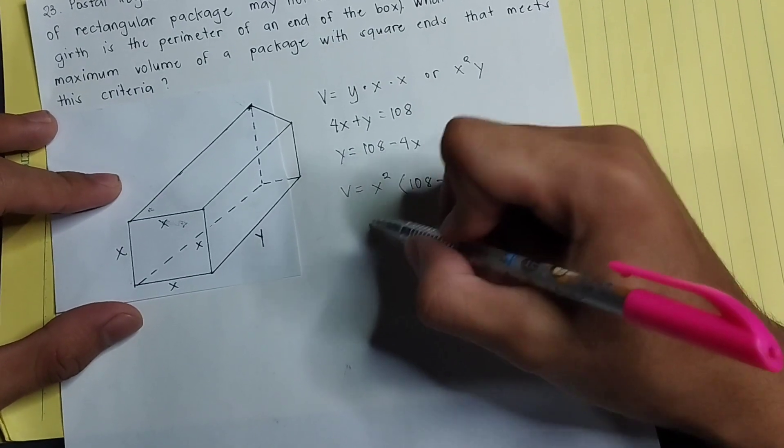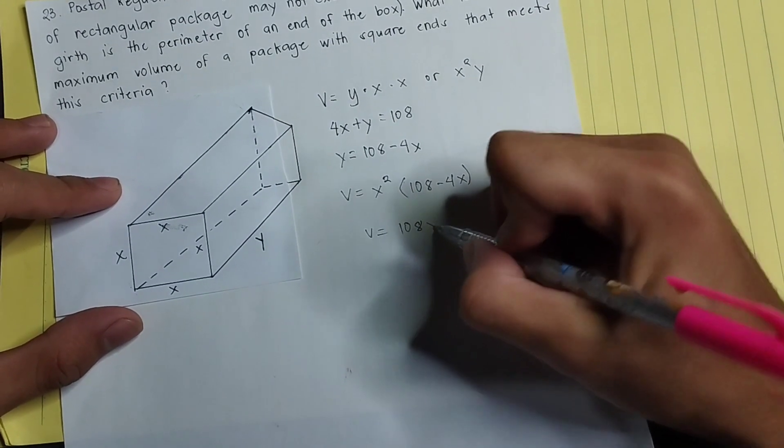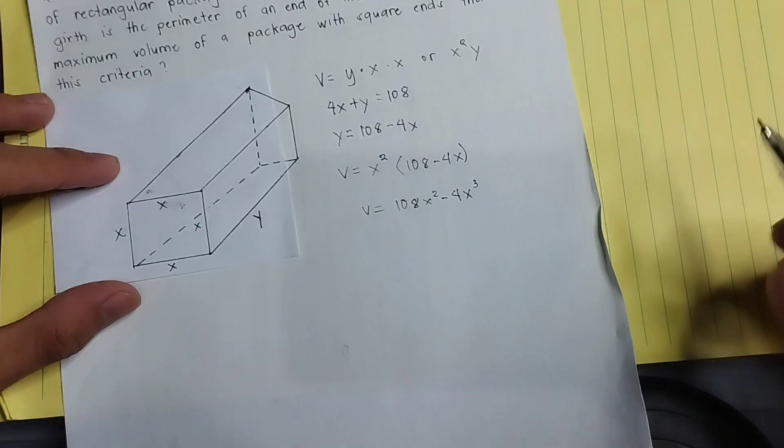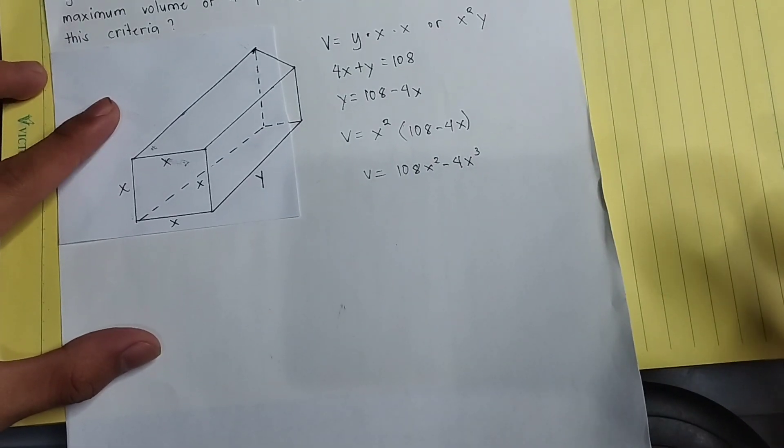And then we can distribute x squared into these two numbers. It will become V equals 108x squared minus 4x cubed. And then after that, we need to identify the domain of the possible values.